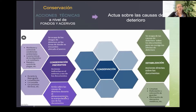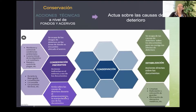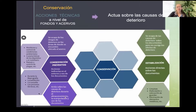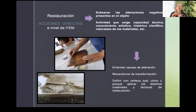Dentro del área de conservación también está la parte de estabilización, actuando sobre las causas de deterioro durante el almacenamiento, la manipulación y su uso. Esto implica acciones directas sobre la documentación, no correctivas sino preventivas: la limpieza, la elaboración y colocación de guardas, la eliminación de elementos metálicos. Todas estas acciones buscan evitar o prevenir que se lleve a cabo un deterioro mayor a largo plazo. Ya la intervención o restauración son acciones directas a nivel de objeto, reparar el daño y devolverle estabilidad material, física, química y estética para que pueda volver a ser consultable.